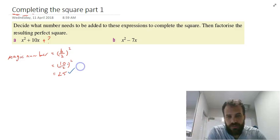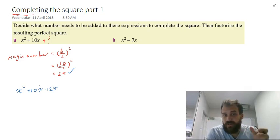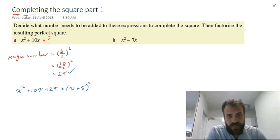So now that we have our magic number of 25, we can add it to this, and we'll get x squared plus 10x plus 25. Now that we've done that, we can factorize it because it's a perfect square now. x squared plus 10x plus 25. The square root of x squared is x. The square root of 25 is 5. And it's a positive b value in the middle, so we're going to have to add it. x plus 5 squared. Done. Easy. Let's try it with another one.